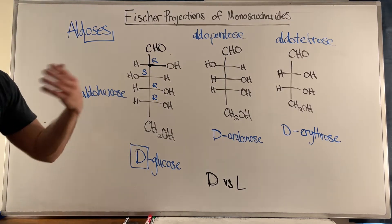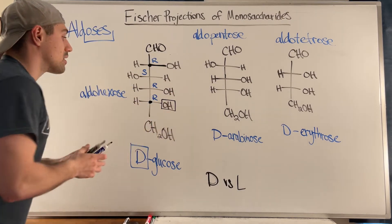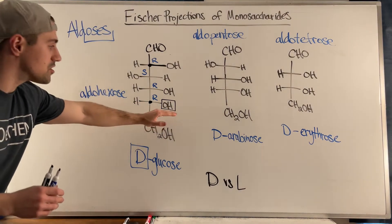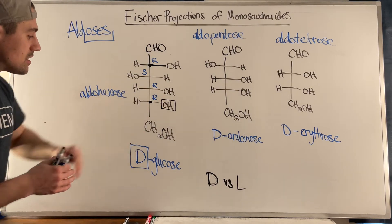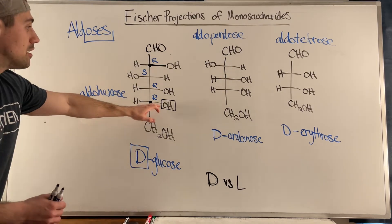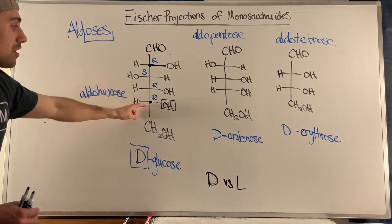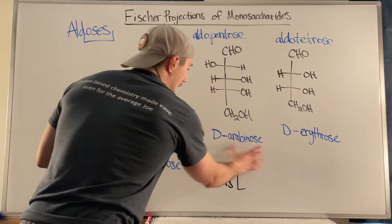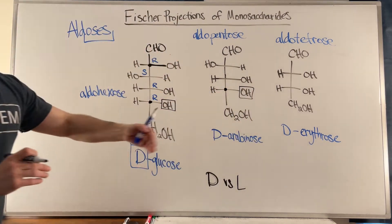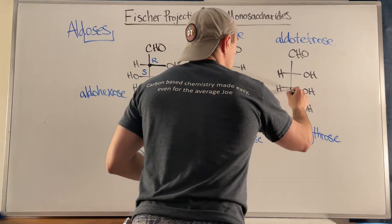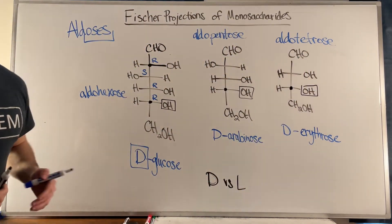What does this D actually stand for? It refers to the positioning of the last OH on the last chiral center in your sugar. Since it is on the right-hand side, we're reusing the dextrorotatory/levorotatory terminology. If it's on the right-hand side, you have a D-sugar. You don't even have to know it's glucose — you can say it's a D-sugar because of the positioning of that OH. Same with D-arabinose and D-erythrose: the OH on the last chiral center is on the right-hand side, so they're D-sugars.